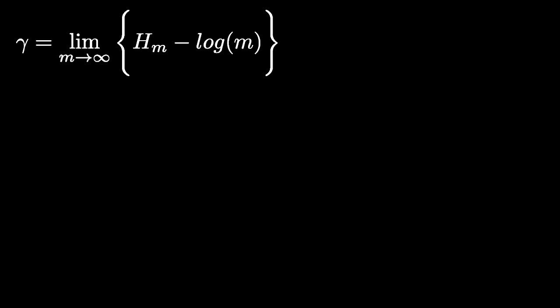The Euler-Mascheroni constant is by definition equal to the limit as M goes to infinity of the Nth harmonic number minus log n. Recall that the Nth harmonic number is equal to 1 plus 1 half plus 1 third all the way up to 1 over N.